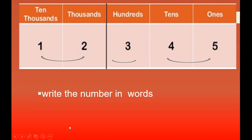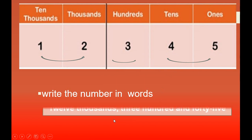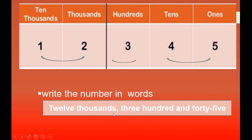There are nineteen thousands. Then we write hundreds — how many hundreds are there? That is 6. Then we read the tens and ones together — that is 17. So we write the number name: nineteen thousand, six hundred and seventeen. Let's solve another example. In the ten-thousands column there is 1 and in the thousands column there is 2, so we read the number twelve — that is twelve thousand. Then we read hundreds: three hundred and forty-five. So the number name is twelve thousand, three hundred and forty-five.